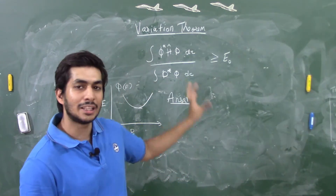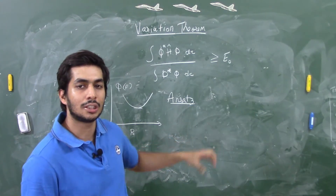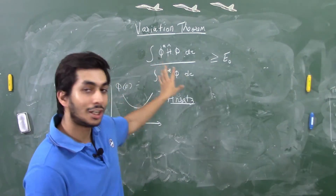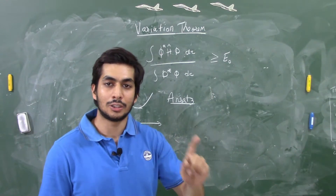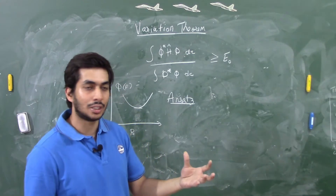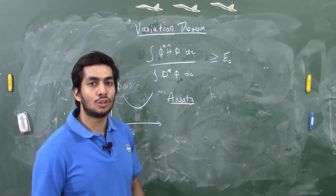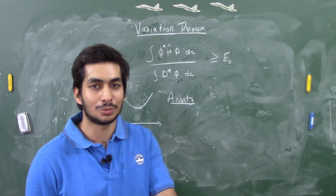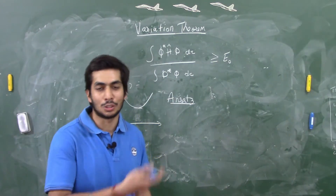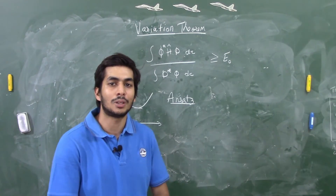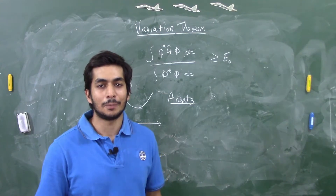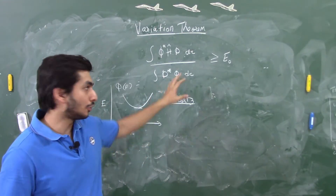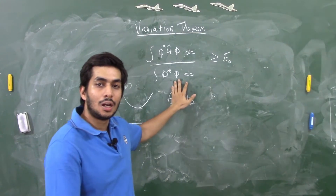You can find the derivation of this fact in many books. If you could find a trial wave function that gives an energy less than the true ground state energy, you would have proven all of quantum mechanics wrong — which is next to impossible. Maybe hundreds of thousands of years in the future someone will prove quantum mechanics wrong, but as of now there's no threat to it.